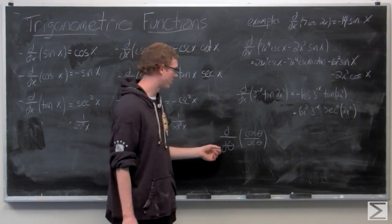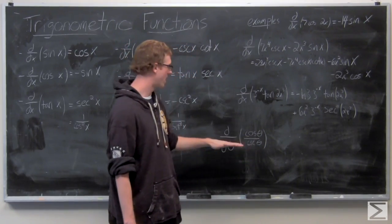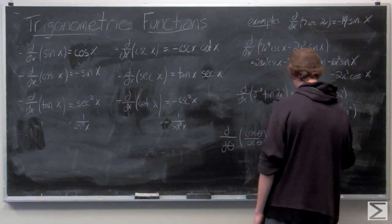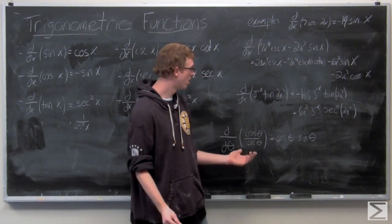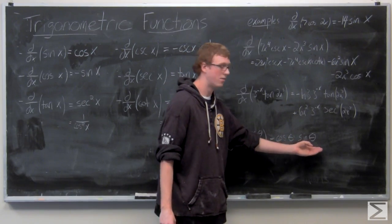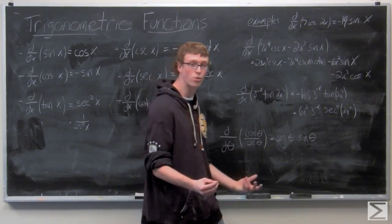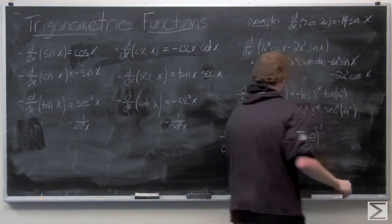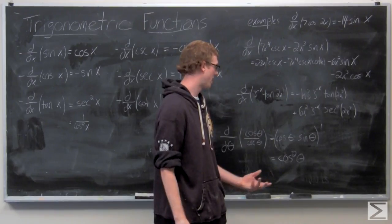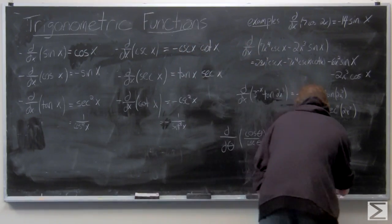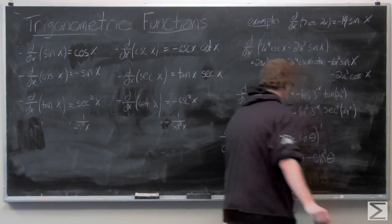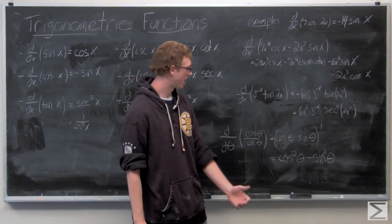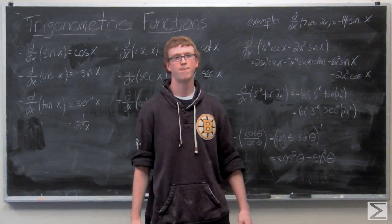The last function is cosine divided by cosecant — an easy one to work with. That's really just cosine theta times sine theta. Using the product rule, we take the derivative of sine theta times cosine theta, which gives cosine squared theta. Then the derivative of cosine, which is negative sine, times sine gives negative sine squared theta. So the derivative of cosine theta over cosecant theta equals cosine squared theta minus sine squared theta. Thank you for watching.